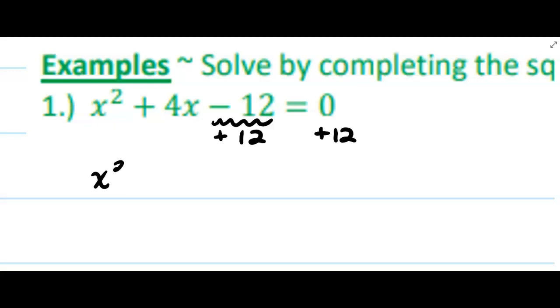Now I'm left with x² + 4x equals 0 plus 12, which is 12. The rule is you're going to take half of b...